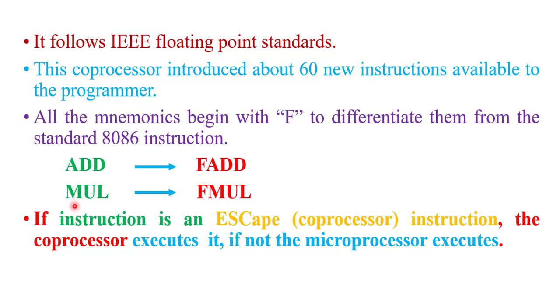8087 only processes that instruction having prefix F. Next instruction is MUL that is multiplication instruction in 8086. If F is added in prefix, FMUL this is 8087 instruction.